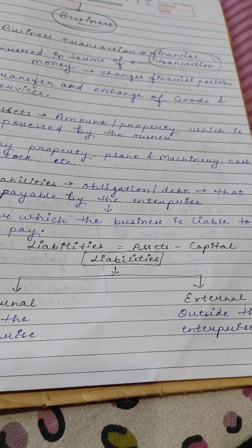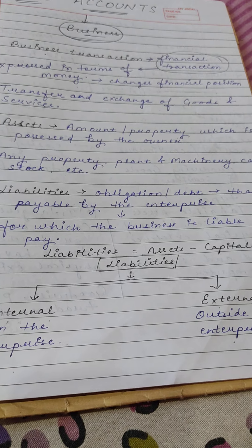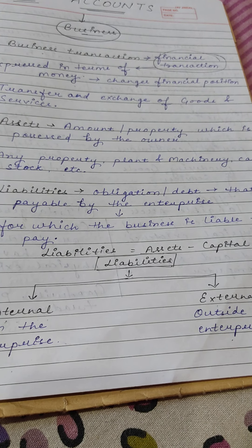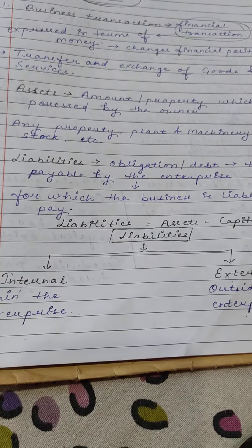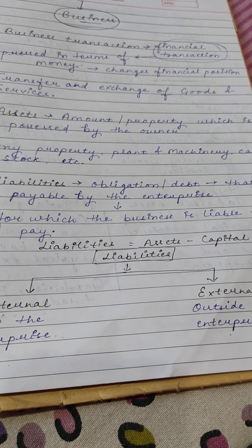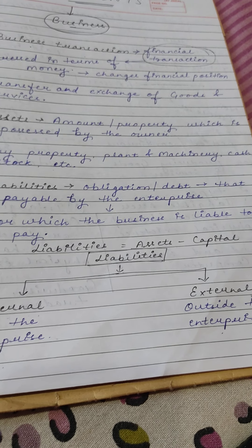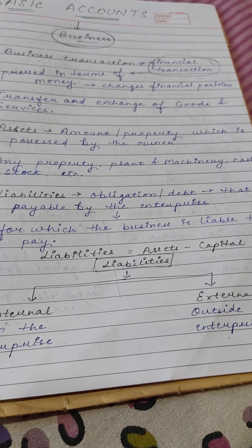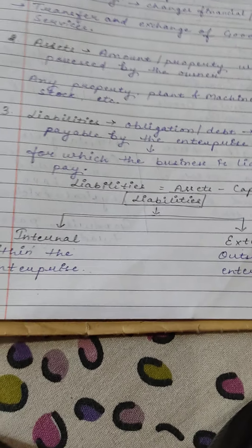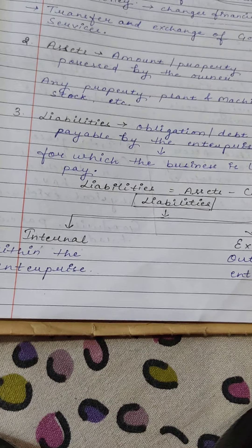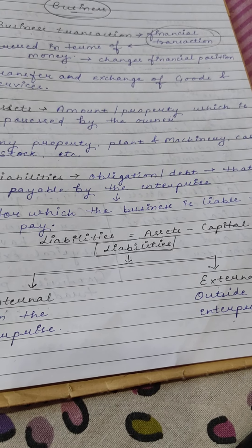Liabilities are the obligations or debts that are payable by the enterprise. It is something the enterprise is liable to pay — for which the business is liable to pay.